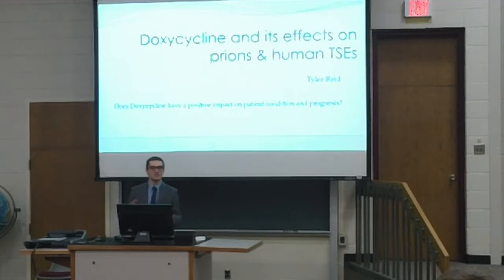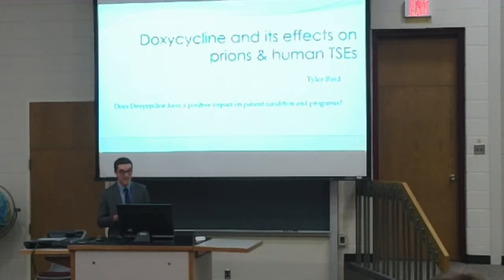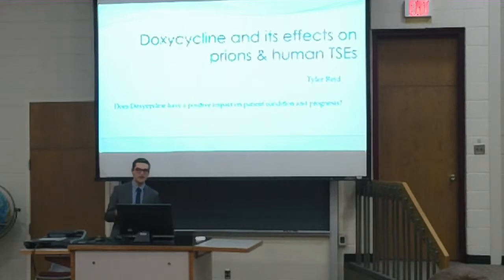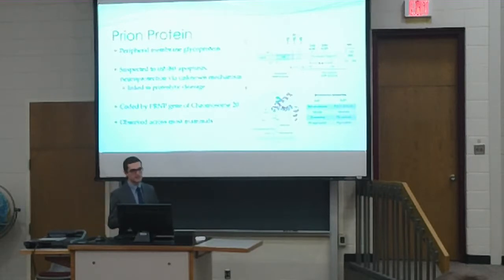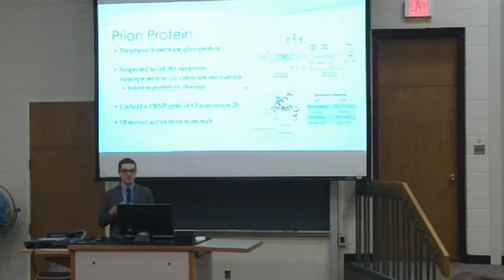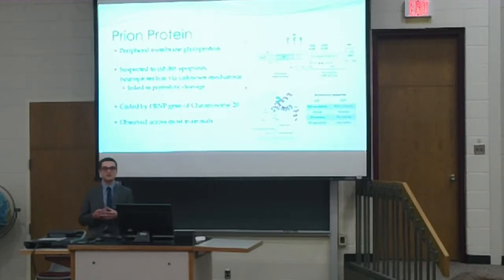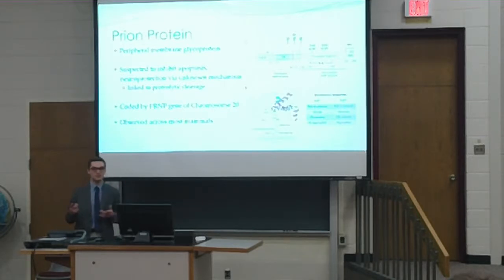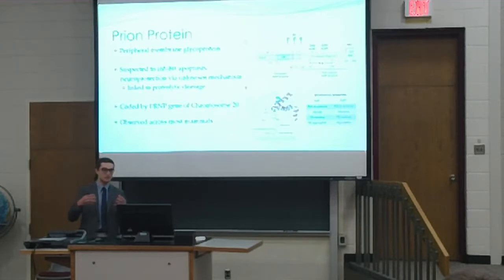That may seem a simple question for a senior seminar, but it's necessary given the lack of evidence and some conflict within the existing evidence. To begin, we'll cover the prion protein itself. Prion protein is seen throughout the human body, expressed in many tissues and across many mammalian species. It's a peripheral membrane glycoprotein with suspected functions related to anti-apoptotic activity and neuroprotection.